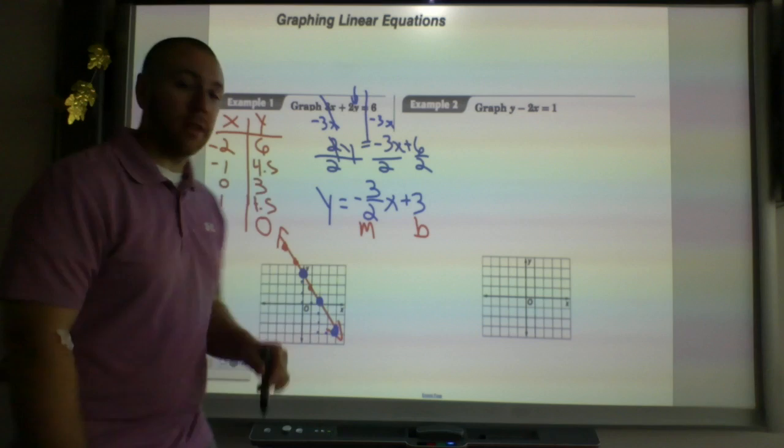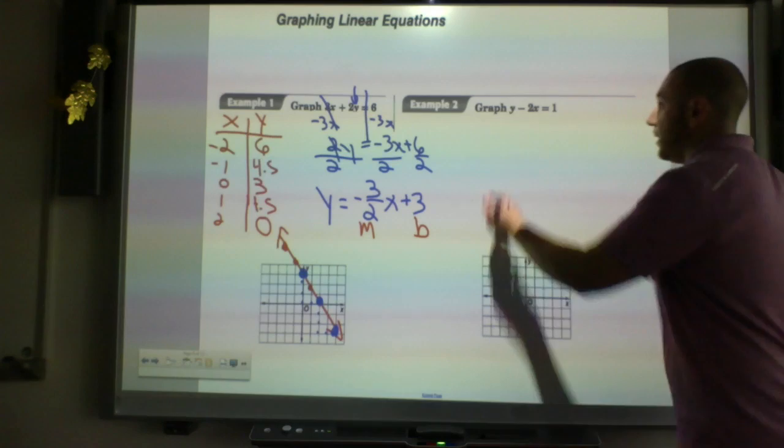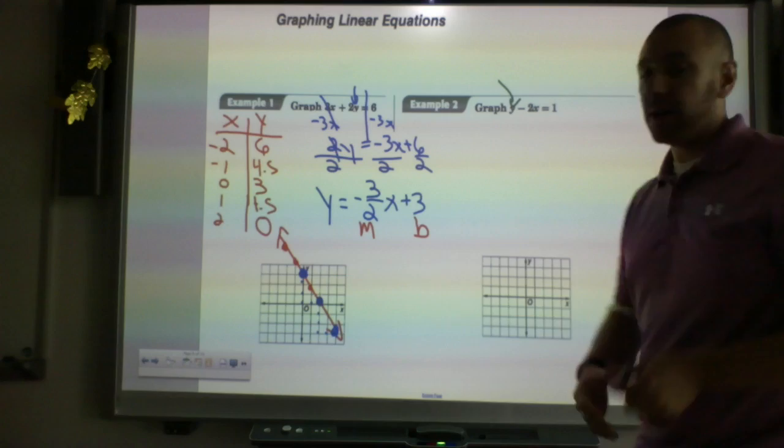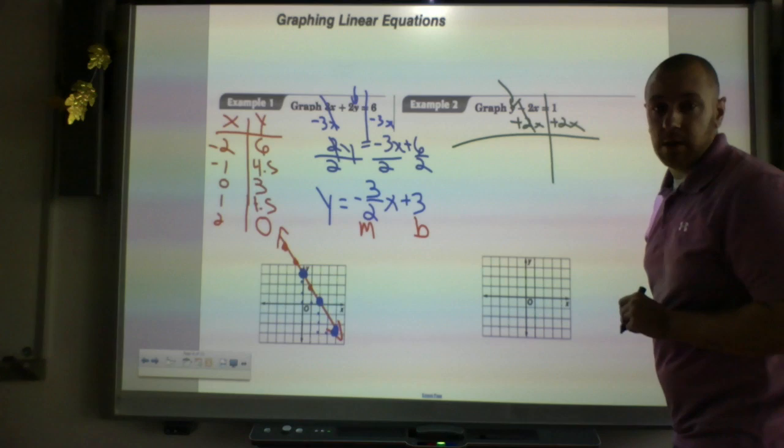I can also continue it out if I want: 1, 2, 3, 1, 2. Now I have the exact same line I did with the table, a little bit easier work. Now I'll show you again with this one. Again, I have to solve for y. I have to get y alone. What is happening to y? Well, I'm subtracting 2x, so what am I going to do? Add 2x to both sides.